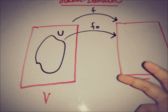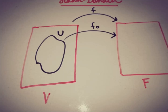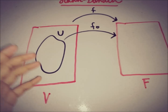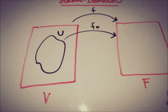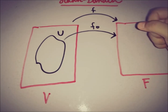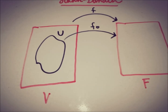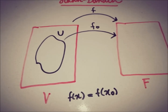Both functionals are linear functionals, since they satisfy the two properties of linearity — which you are familiar with, so I won't discuss them here. So we have linear space V, subspace U, field F, a linear functional F from V to F, and a linear functional F₀ from U to F.